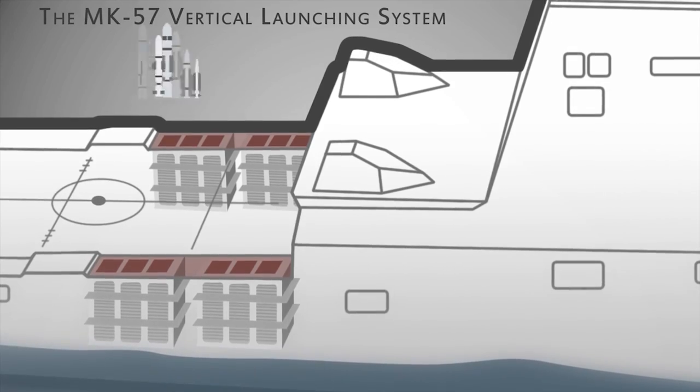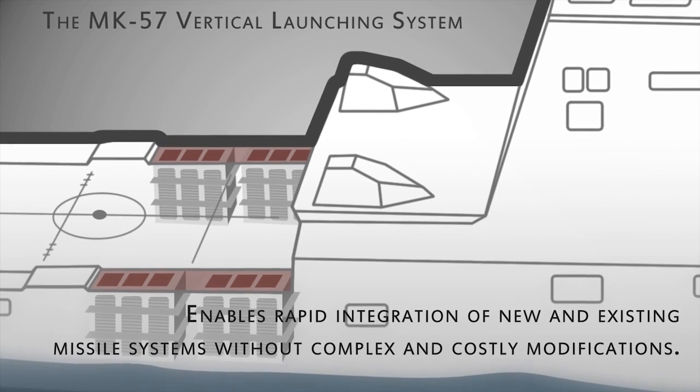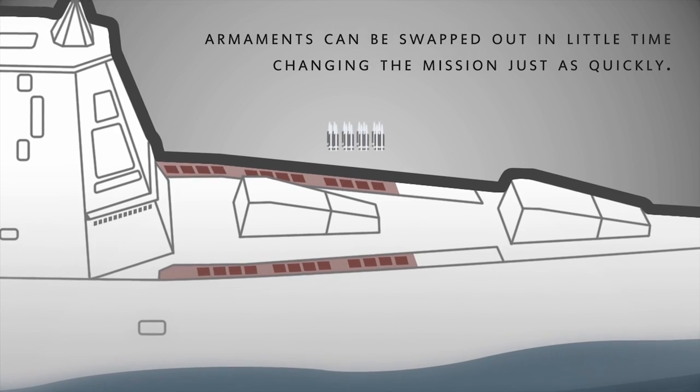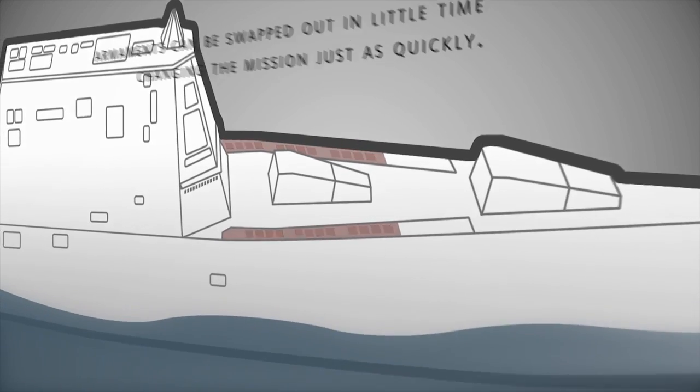The Mark 57 vertical launching system enables rapid integration of missile systems without modifications. Armaments can be swapped out in little time, changing the mission just as quickly.